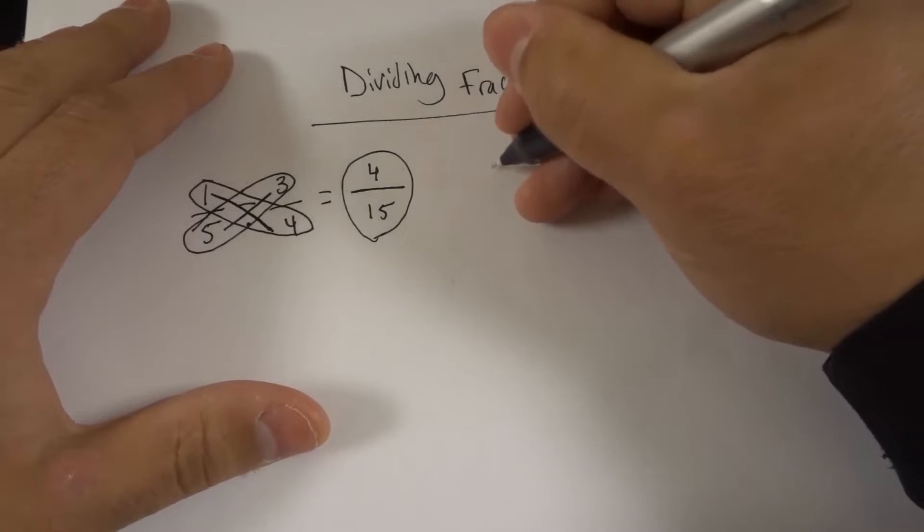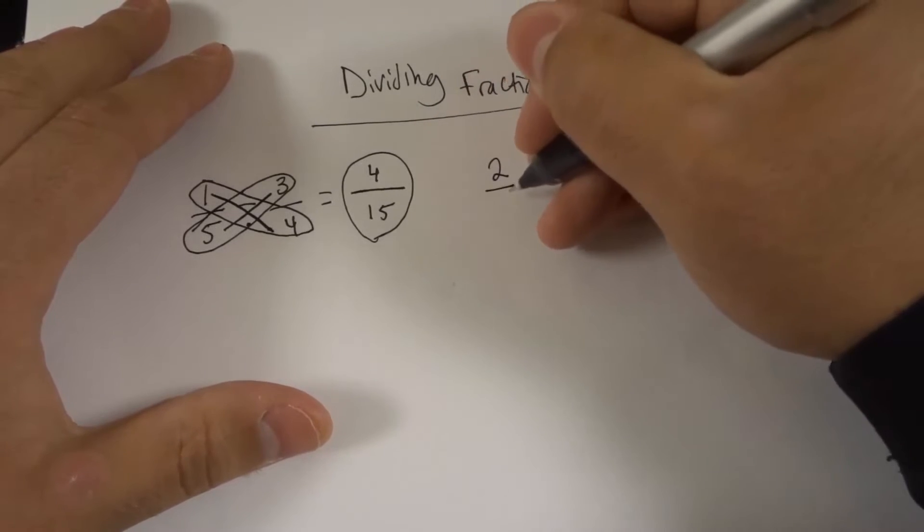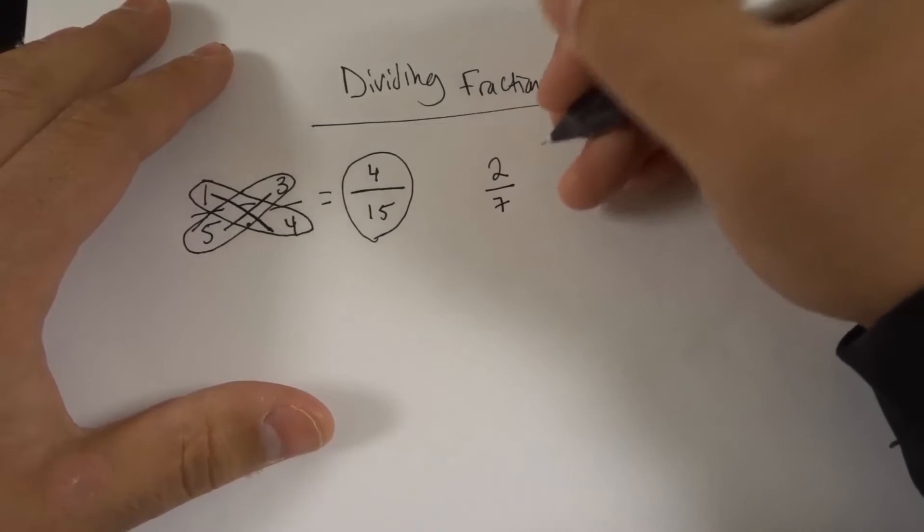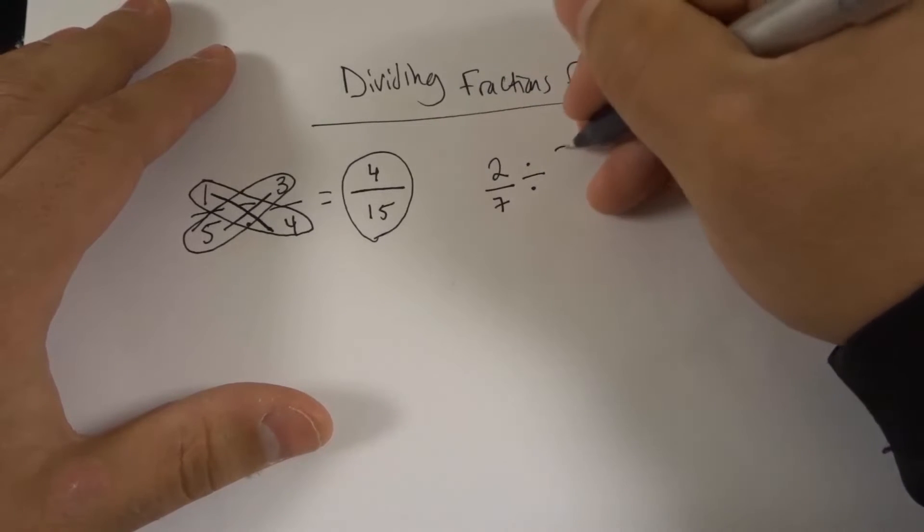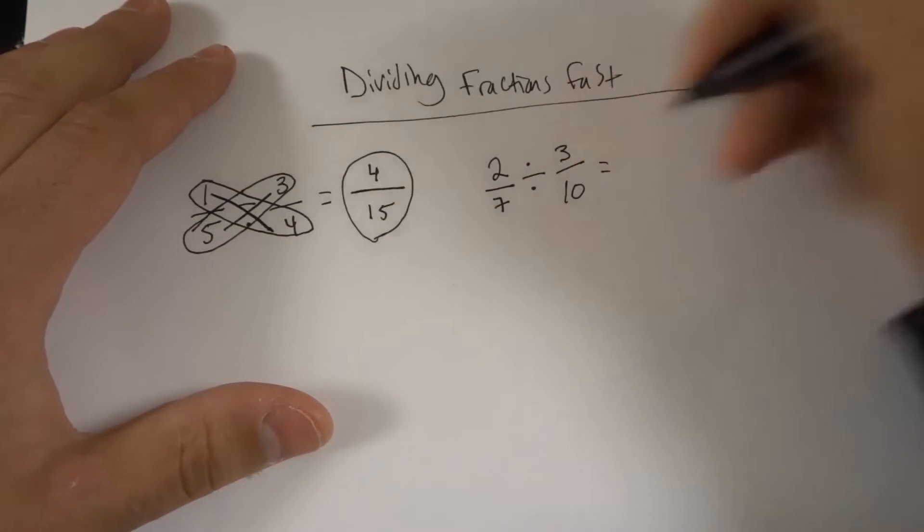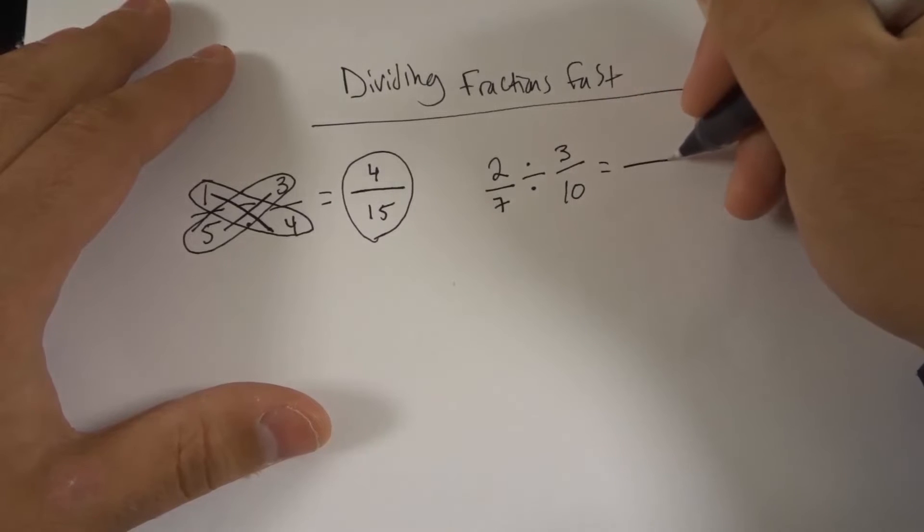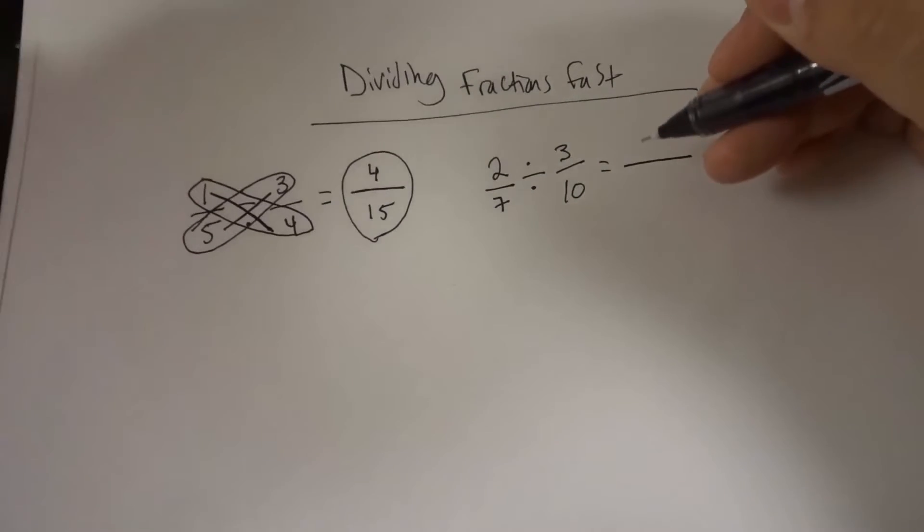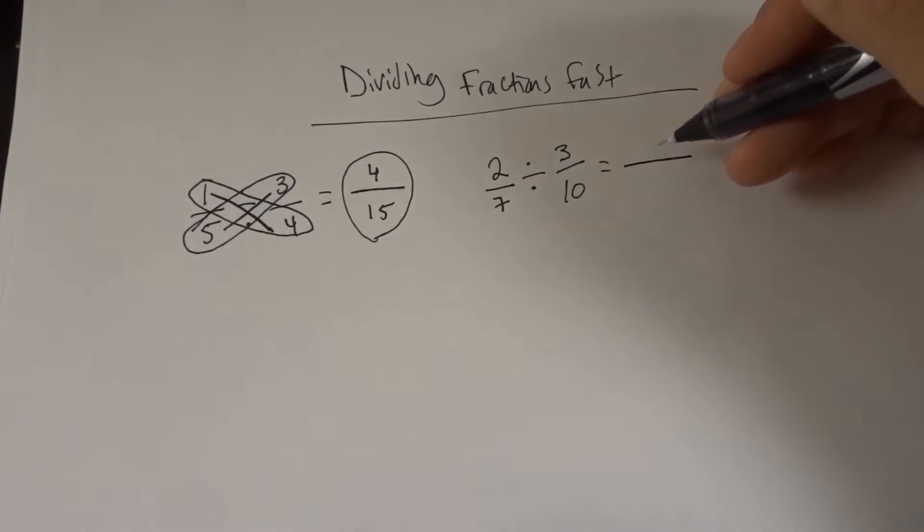Let's do something like 2 over 7. Let's take some bigger numbers. Divided by 3 over 10. And we're going to take our answer, put a nice line in the middle because we know that our answer is going to be a fraction. And it's going to have a number on the top and a number on the bottom.